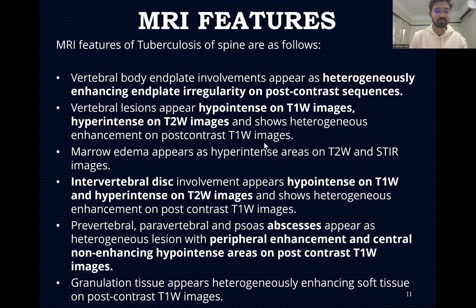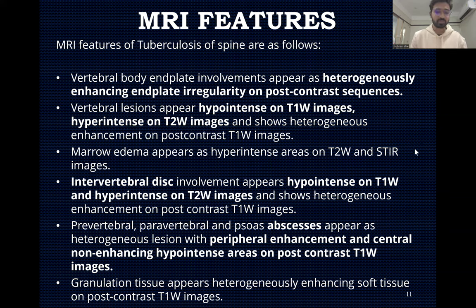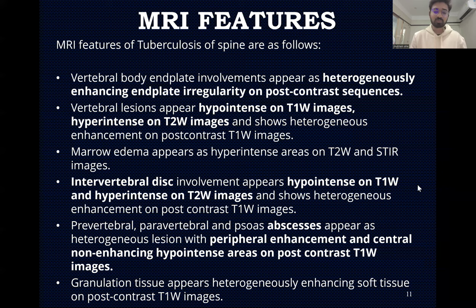MRI features of tuberculosis of the spine: Vertebral body end plate involvement appears as heterogeneously enhancing end plate irregularity on post-contrast sequences. Vertebral lesions appear hypointense on T1-weighted images, hyperintense on T2-weighted images, and show heterogeneous enhancement on post-contrast T1-weighted images. Marrow edema appears as hyperintense areas on T2-weighted and STIR images. Intervertebral disc involvement appears hypointense on T1 and hyperintense on T2, with heterogeneous enhancement on post-contrast T1. Pre-vertebral, para-vertebral, and psoas abscesses appear as heterogeneous lesions with peripheral enhancement and central non-enhancing hypointense areas on post-contrast T1. Granulation tissue appears as heterogeneously enhancing soft tissue on post-contrast T1-weighted images.